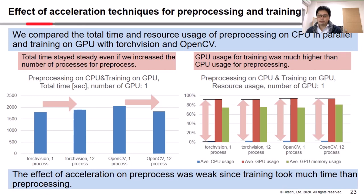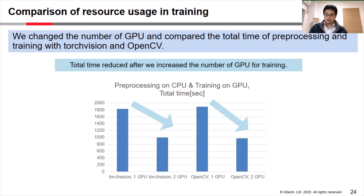In order to improve the overall performance in this case, we increased the number of GPUs for training and observed the total time of preprocessing and training with TorchVision and OpenCV. Please look at the figure. It indicates the total time of preprocessing on CPU and training on GPU in both OpenCV and TorchVision cases. Please note that the number of processes is 1. As you can see, total time reduced after we increased the number of GPUs for training.